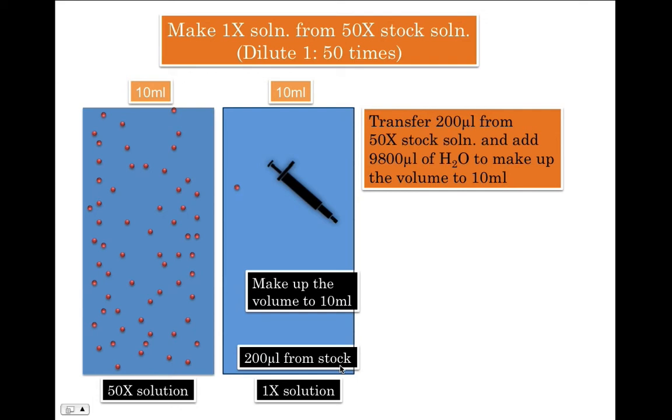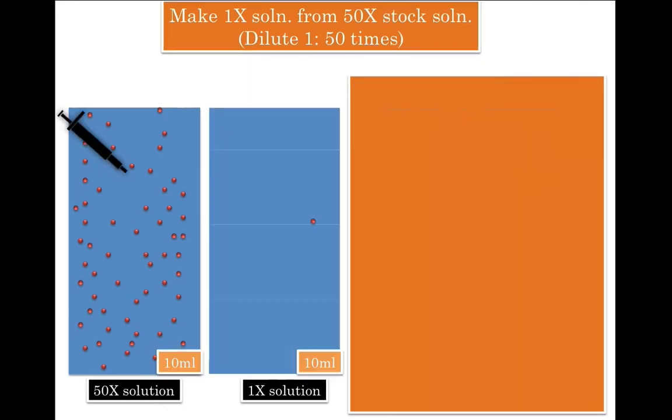This was the logic behind dilution. However, you can reach the same conclusion by a simple formula which is C1V1 equals C2V2, where C1 is concentration of 50X solution, which is 50X of course. V1 is volume of 50X solution. This is the volume of 50X solution that will be transferred to 1X solution. C2 is concentration of 1X solution which is 1X of course.